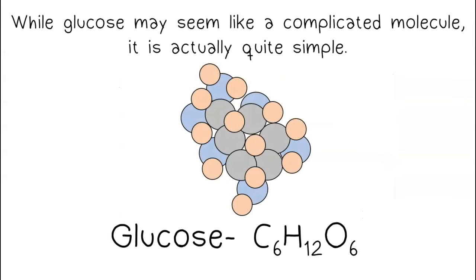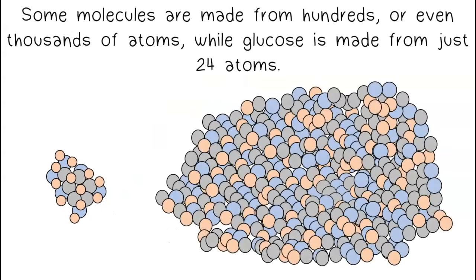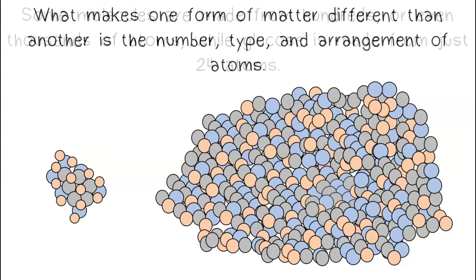While glucose may seem like a complicated molecule, it's actually quite simple. Some molecules are made from hundreds or even thousands of atoms, while glucose is made from just 24 atoms. What makes one form of matter different than another is the number, type, and arrangement of atoms.